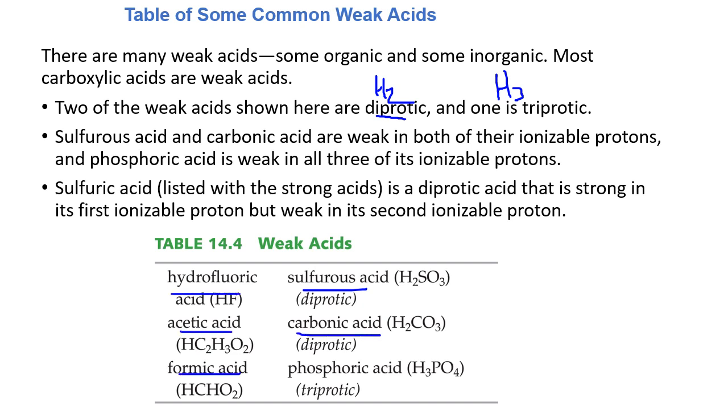formic acid, phosphoric acid. These are all weak acids. You don't really have to memorize these. If you know the six that are strong acids, every other acid is a weak acid.